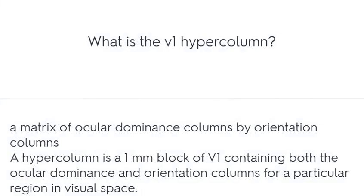What is the V1 hypercolumn? A matrix of ocular dominance columns by orientation columns. A hypercolumn is a 1mm block of V1 containing both the ocular dominance and orientation columns for a particular region in visual space.